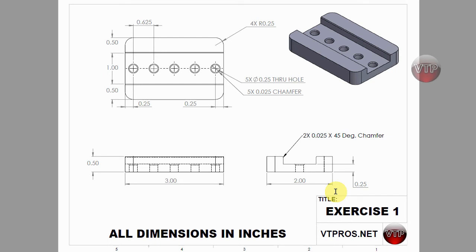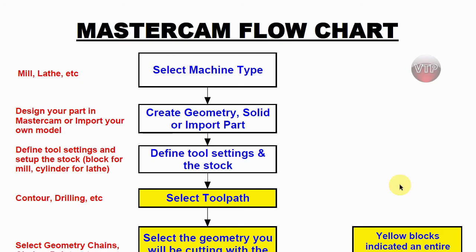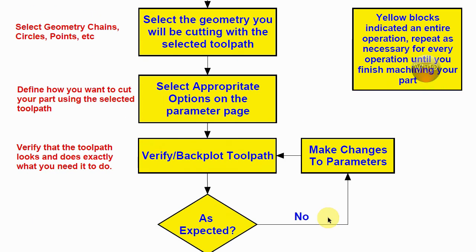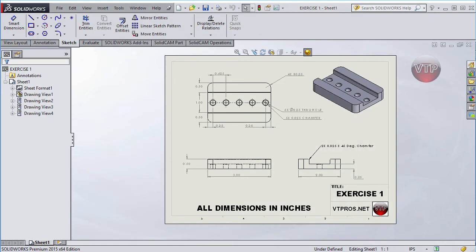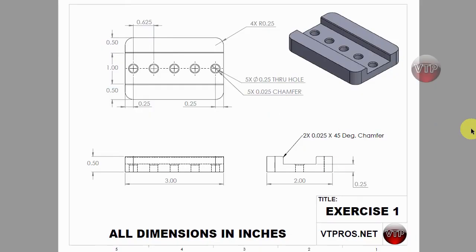So this is our part. I suggest you print this out and have it in front of you. You also want to print out the Mastercam flowchart, which I'll open up quickly — it's also a PDF included in your exercise files folder. That flowchart is going to help guide you through the entire programming and program creation in Mastercam, step by step. I'll be using it in the first exercise and the next few exercises. Both the flowchart and the part drawing fit on a single 8.5 by 11 sheet of paper.